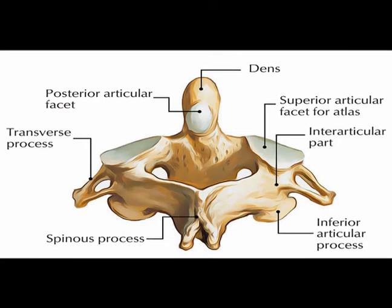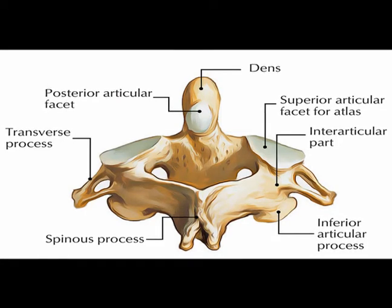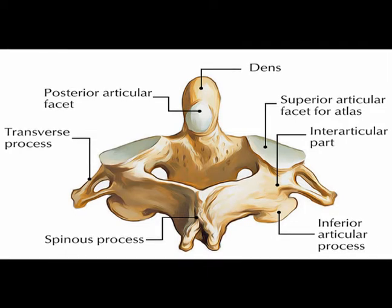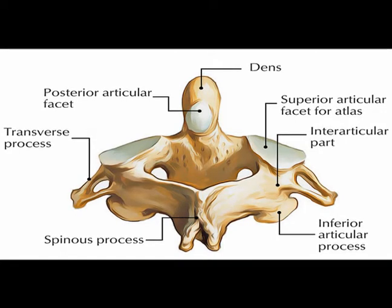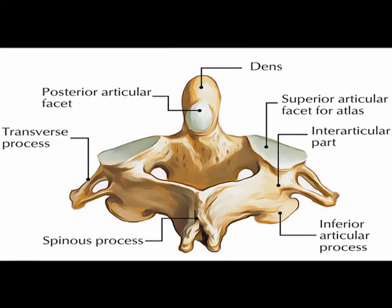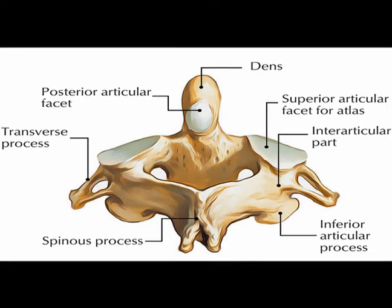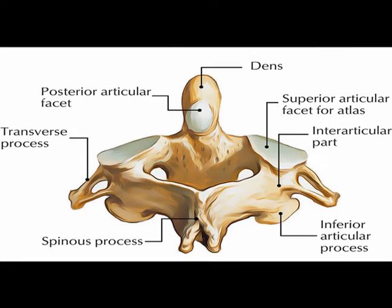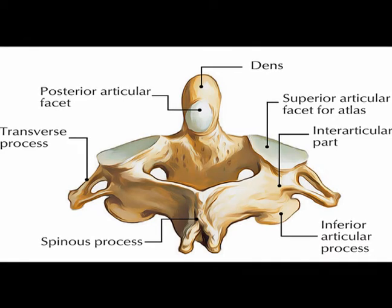C2 is known as the axis. It articulates superiorly with C1 by a unique bony structure called the dens, or the odontoid process. The odontoid process projects superiorly from the vertebral body and articulates with the atlas. This permits pivoting motion and a greater range of motion in rotating the neck.